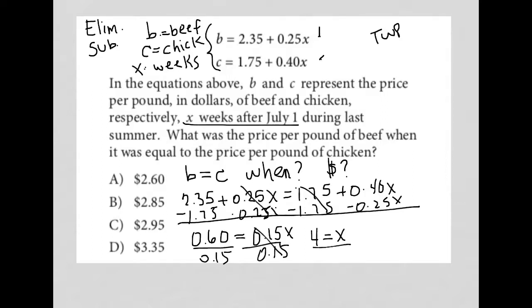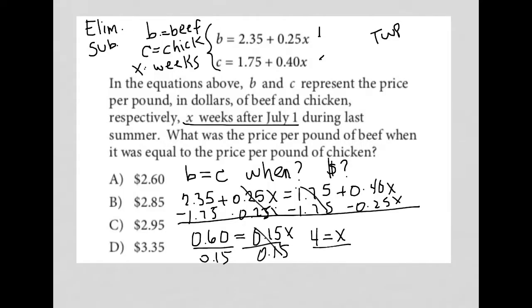I have x equals 4, so I can figure out the cost by filling in 4 for x. I can use either the b equation or the c equation because they both should be equal at this point. I'm going to use b. So I have 2.35 plus 0.25 times 4. 0.25 times 4 is 1, so I have 2.35 plus 1, and 2.35 plus 1 is 3.35.